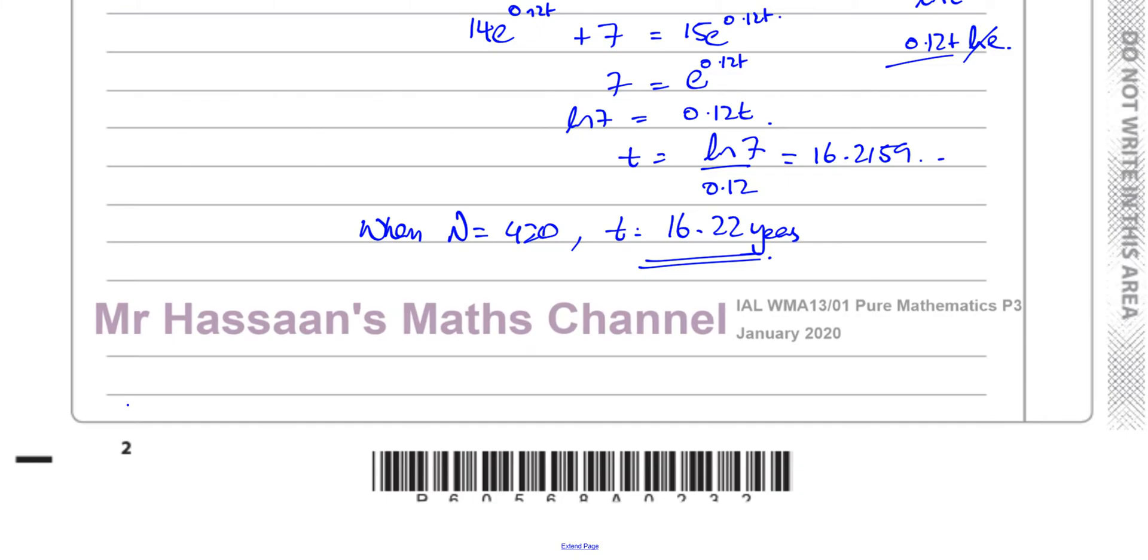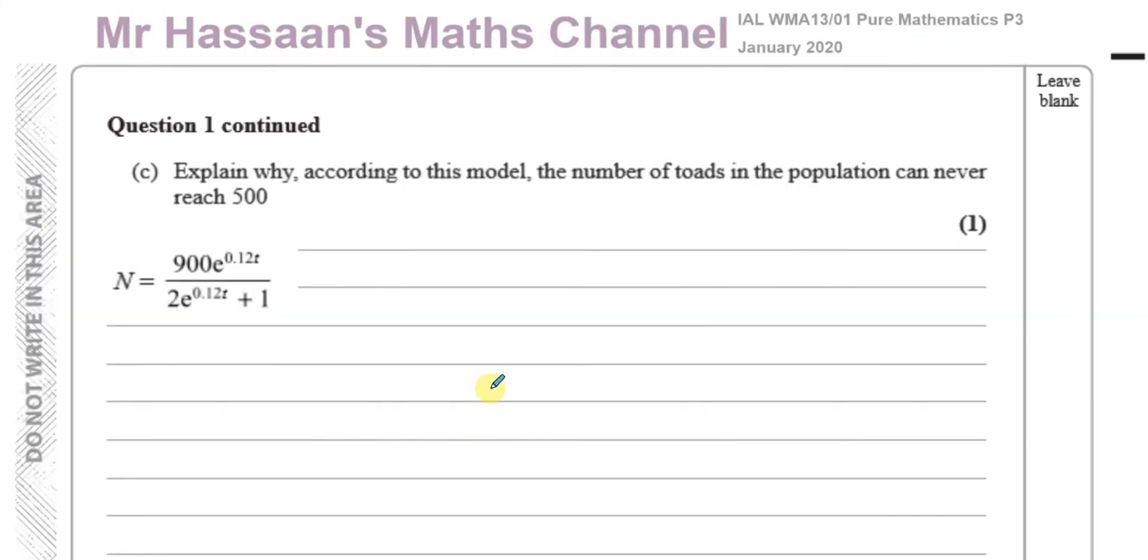Now for part c. It says explain why according to this model, the number of toads in the population can never reach 500. So what we can say here, there's a couple of ways we can do it.